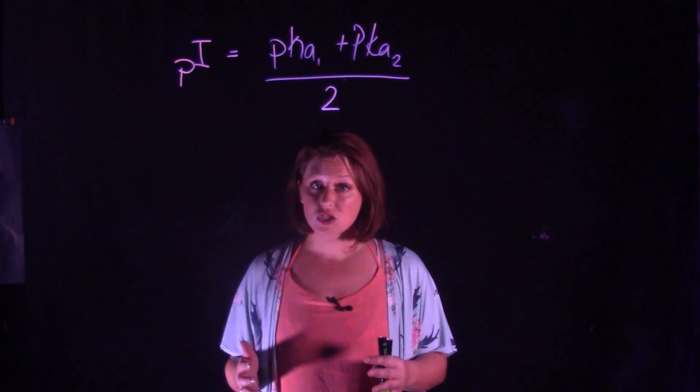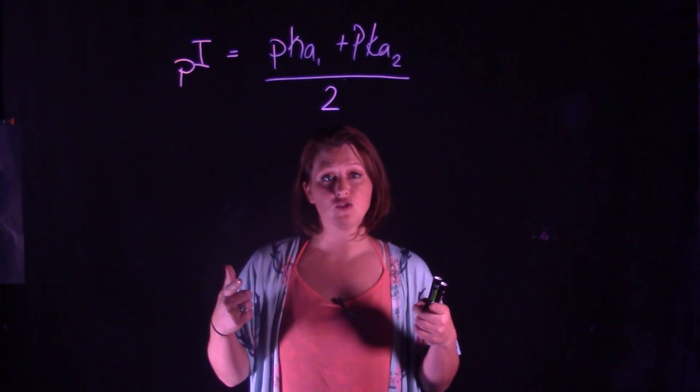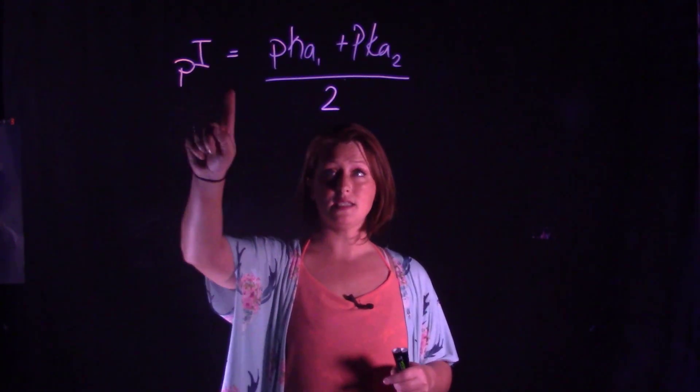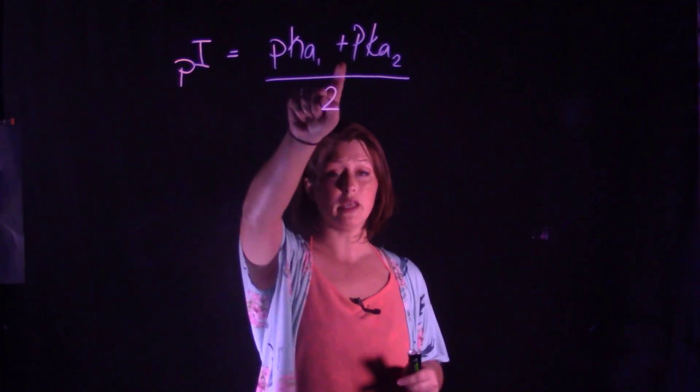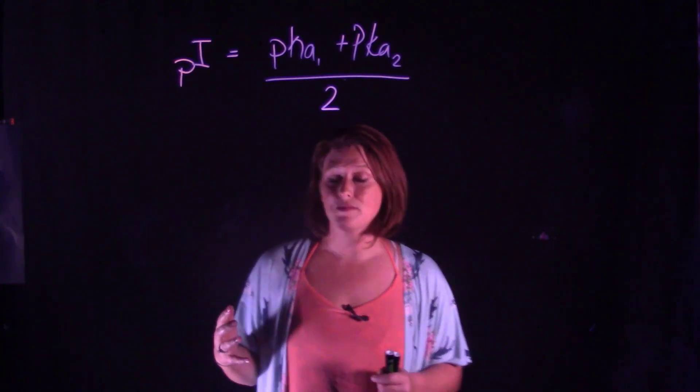For a number of molecules this is pretty straightforward. If you only have two pKa's, the equation that you use is pI equals pKa1 plus pKa2 divided by two.